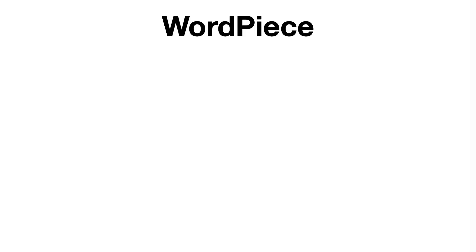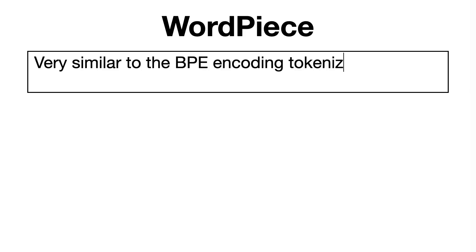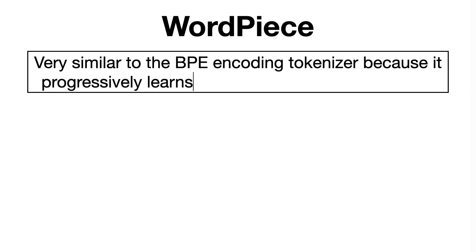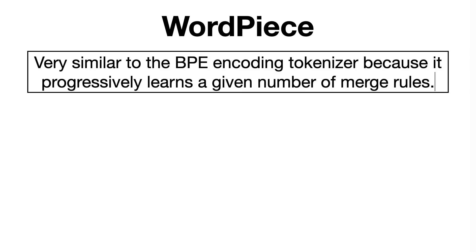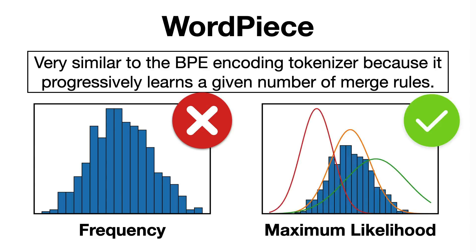which is very similar to BPE encoding, in the sense that it first initializes the vocabulary to include every character present in the training data and progressively learns a given number of merge rules. However, in contrast to BPE, WordPiece does not choose the most frequent symbol pair, but the one that maximizes the likelihood of the training data once added to the vocabulary.